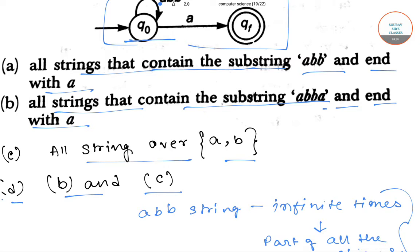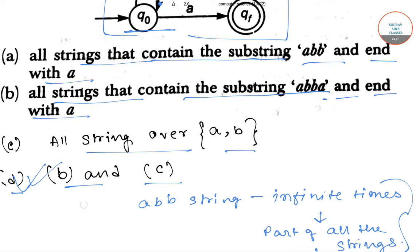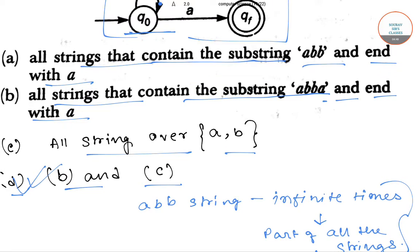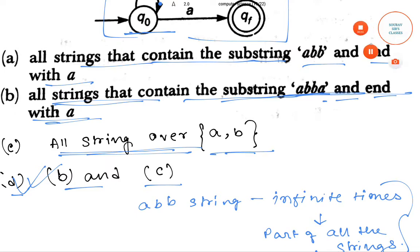So option D will be our answer, as it says both B and C. Option B states all strings that contain substring ABBA and end with A, and option C states all strings over A and B. So option D is our final answer.